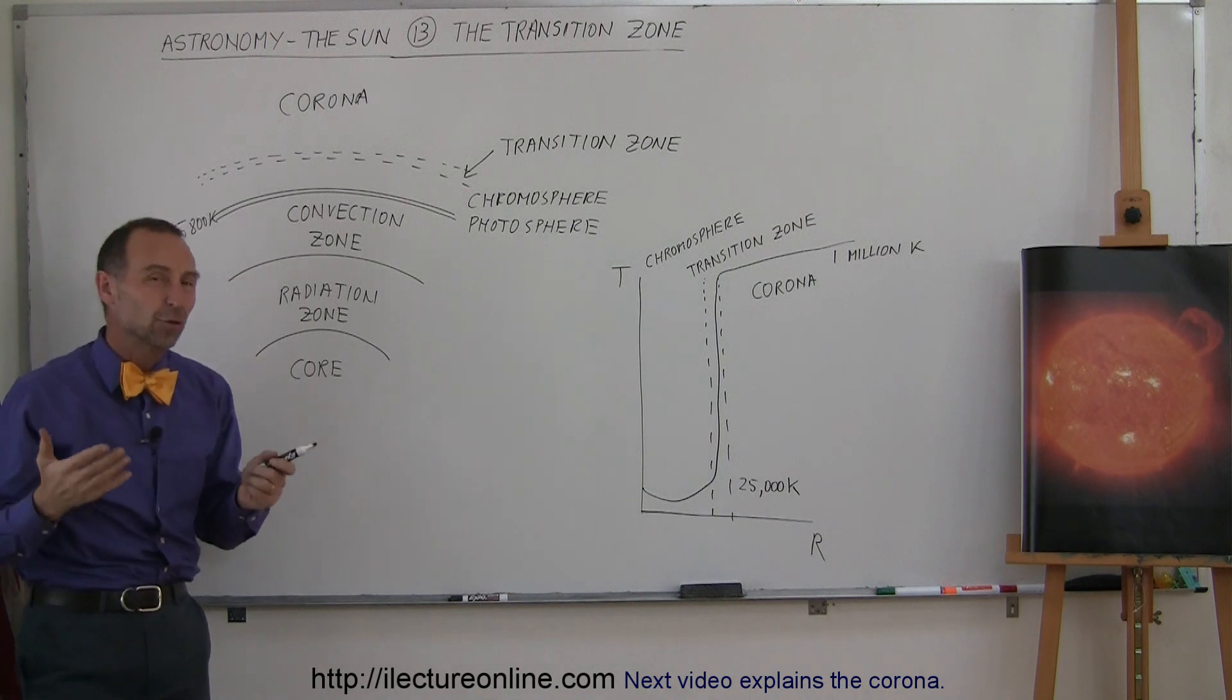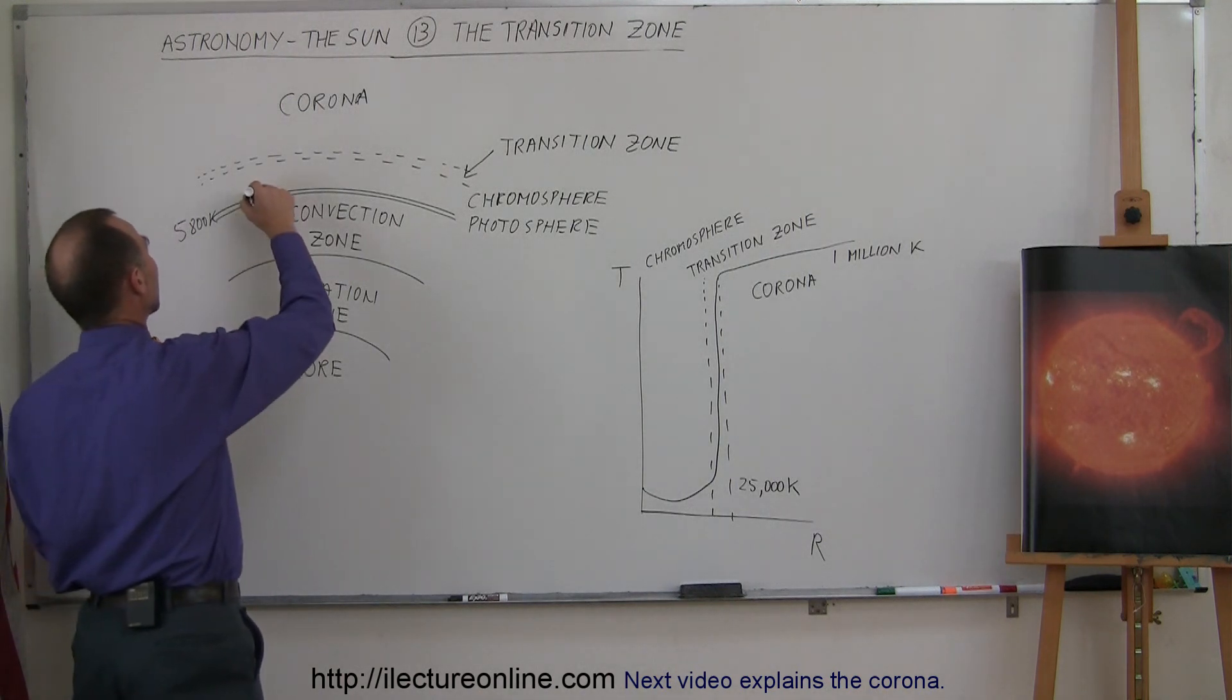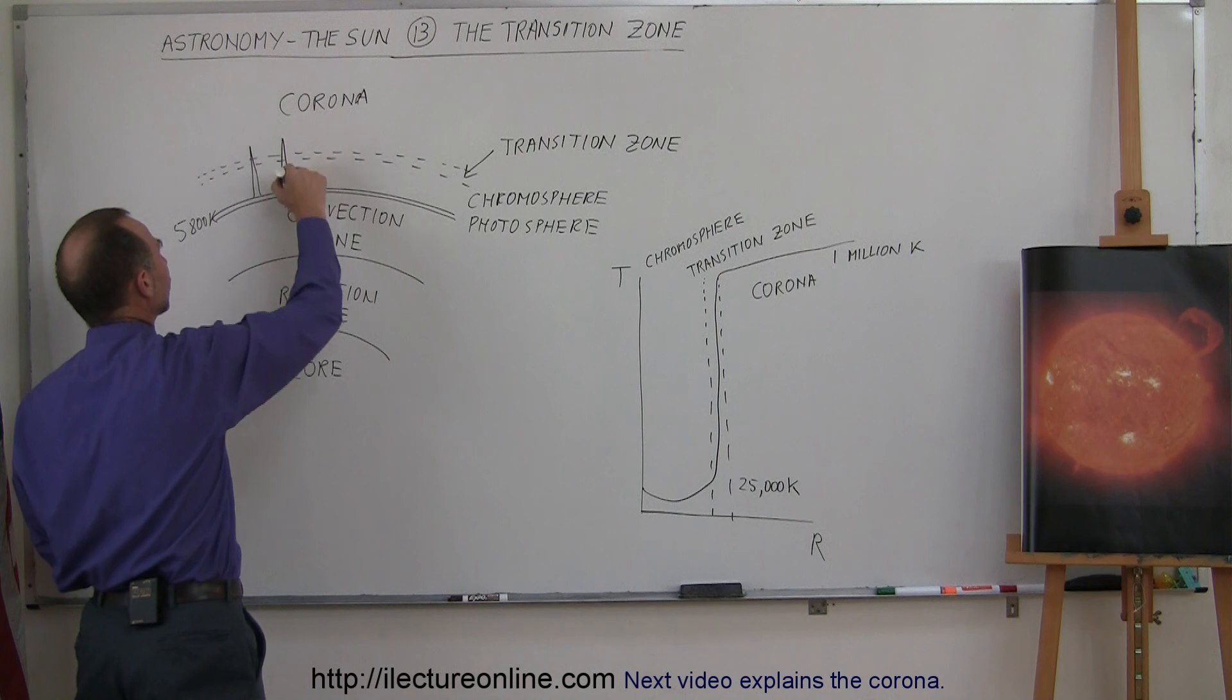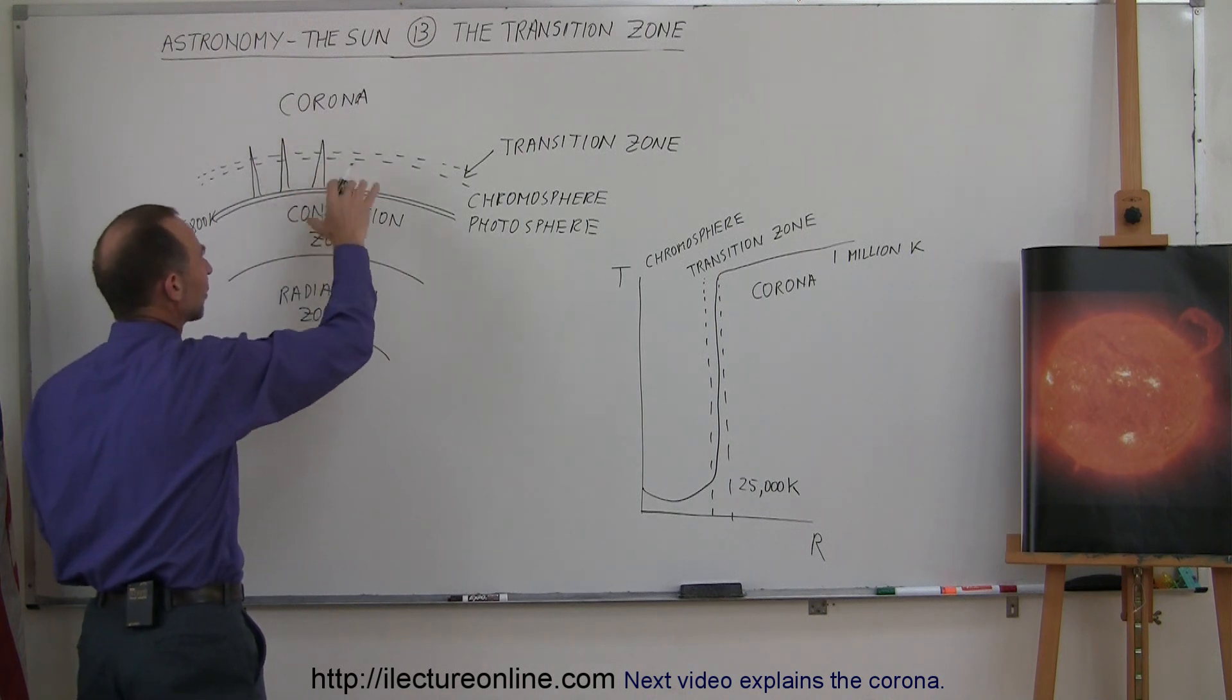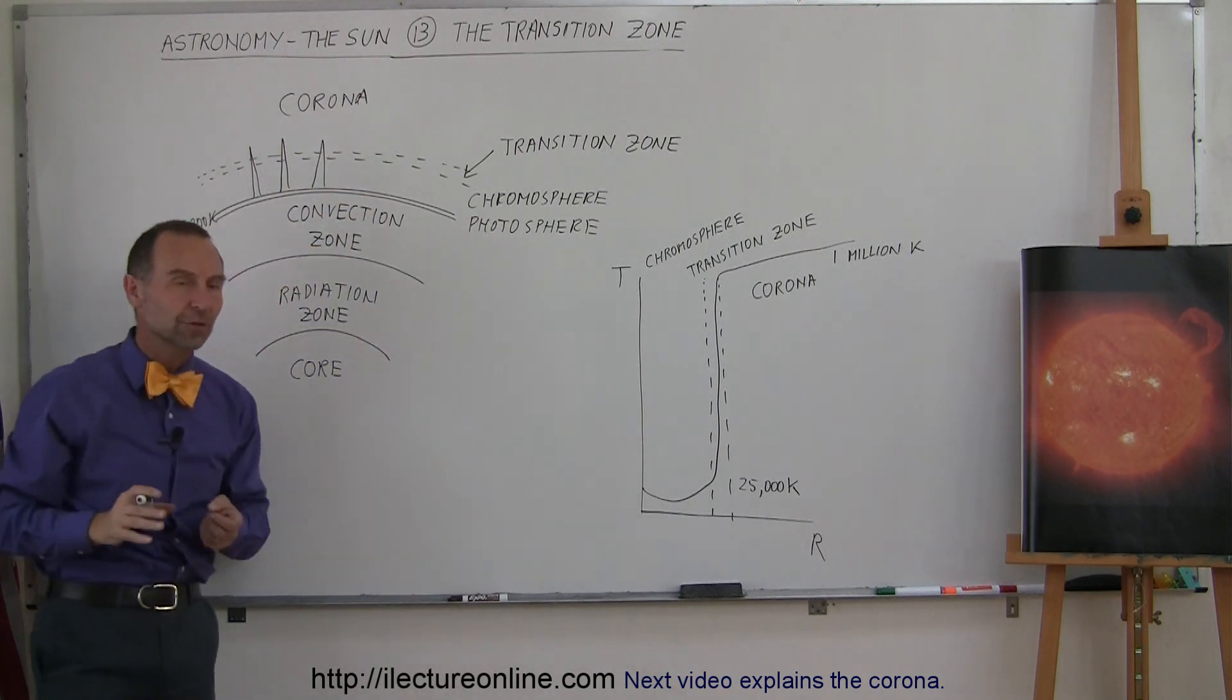the temperature is maybe around 10,000 to 25,000 Kelvin. Remember that we have all these spicules sticking out from the surface of the sun, which may have something to do with the heating process in the outer layer of the chromosphere.